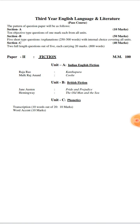Unit B is British Fiction. Two English novels have been prescribed: Pride and Prejudice by Jane Austen, and The Old Man and the Sea by Ernest Hemingway. Jane Austen was an English novelist while Ernest Hemingway was an American novelist.